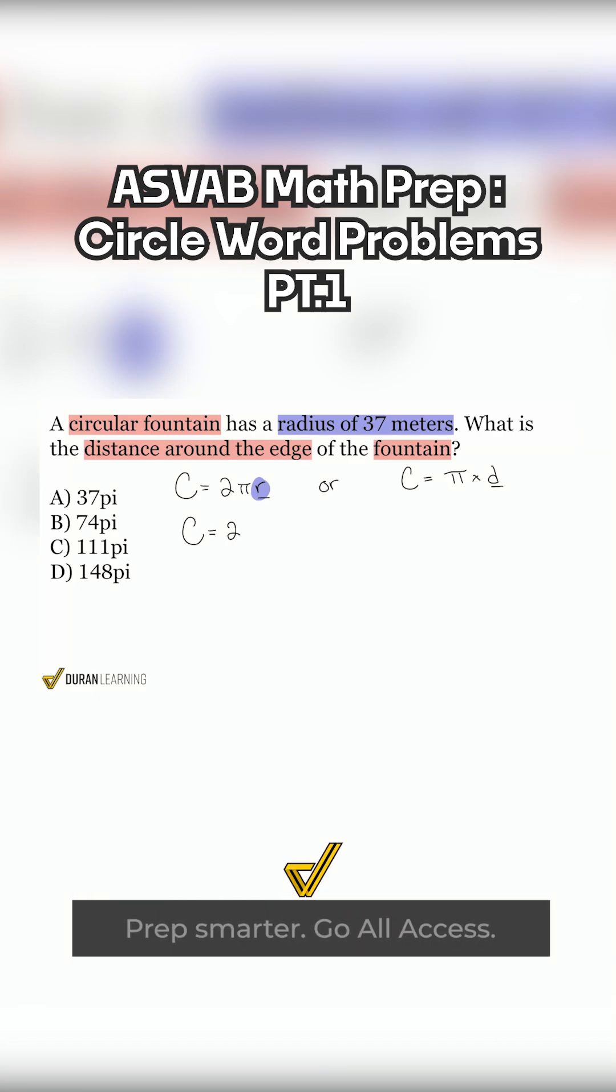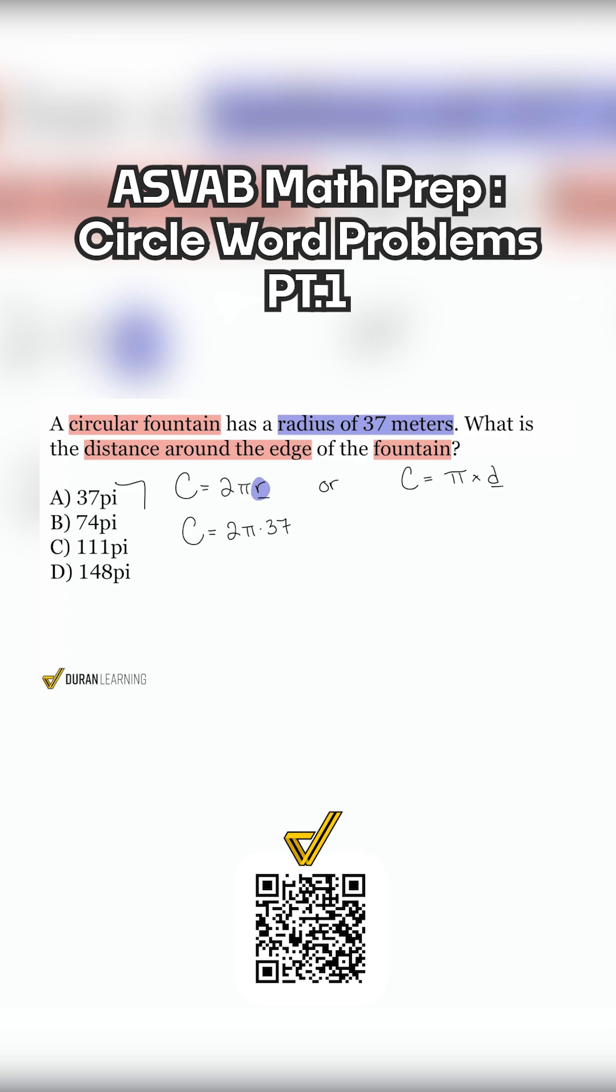Circumference equals 2 pi times that 37. And that's going to be our answer. We can leave pi as pi because the answer choices are listed as pi. And so with that,